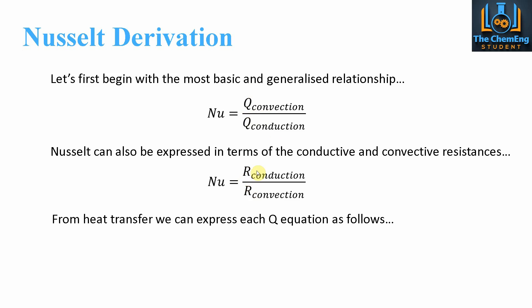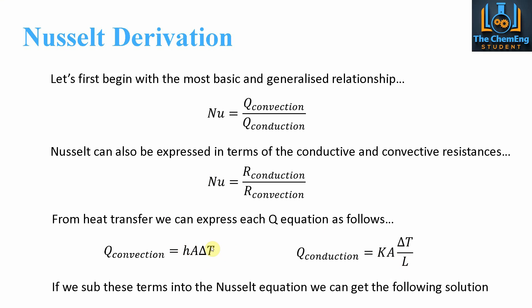Now for heat transfer we can express the Q equations for convection and conduction as follows. For convection we know the equation Q equals HA delta T, and for conduction we have KA delta T over L. In all these cases the values have the same definition. H is our heat transfer film coefficient, A is our area, delta T is our difference in temperature, K is our thermal conductivity, and L is the characteristic length. We can substitute Q convection and Q conduction into this ratio and cancel out our like terms.